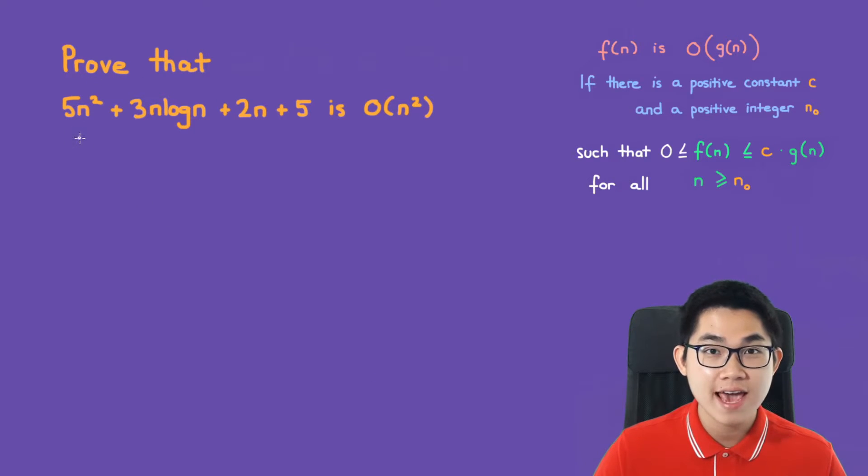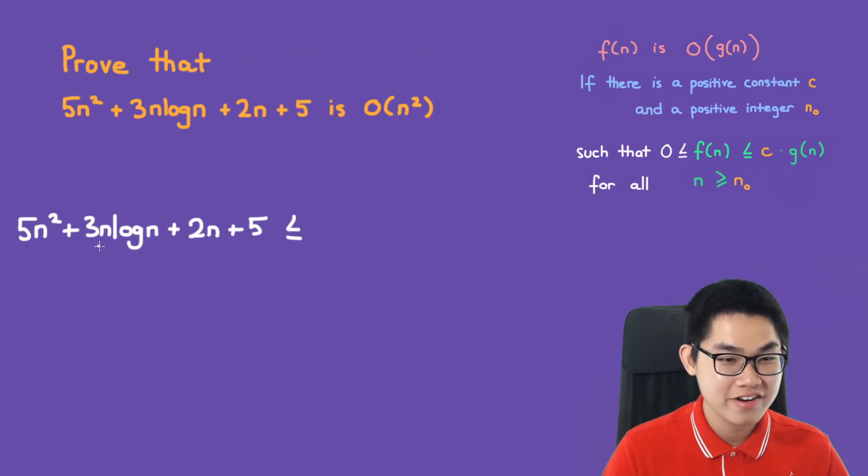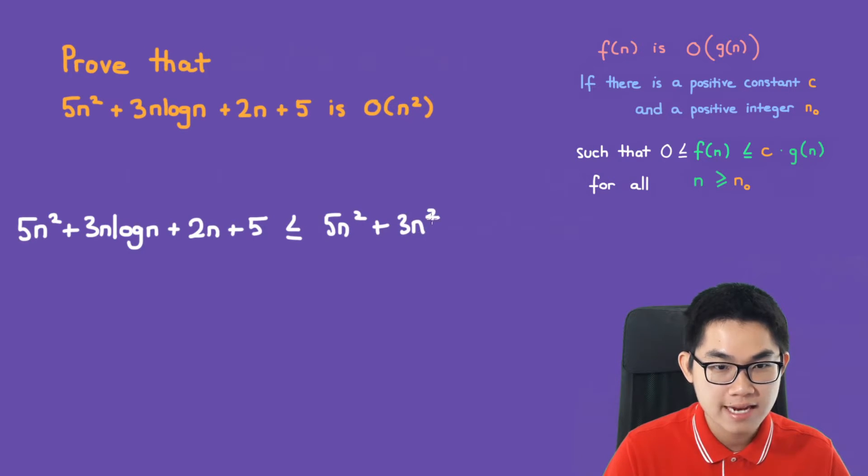Proof that 5n squared plus 3n log n plus 2n plus 5 is O(n squared). So this right here is less than or equal to 5n squared plus 3n squared. And this is because 3n squared is larger than n log n. And we'll talk about this in a moment.